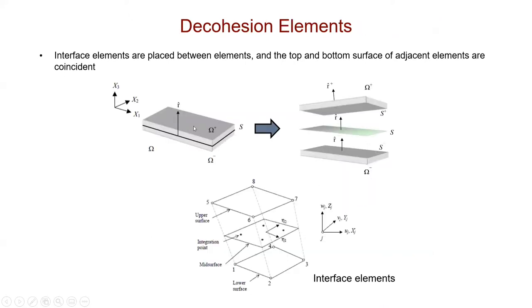So how does this work? I have two blocks of materials. The way it works is by embedding that interface, something called interface elements. In Abacus, those elements are called COH3D8: COH for cohesive, 3D because it's three-dimensional, and 8 because it's 8-noded. Between these two solid elements, I'm inserting a layer of interface elements.